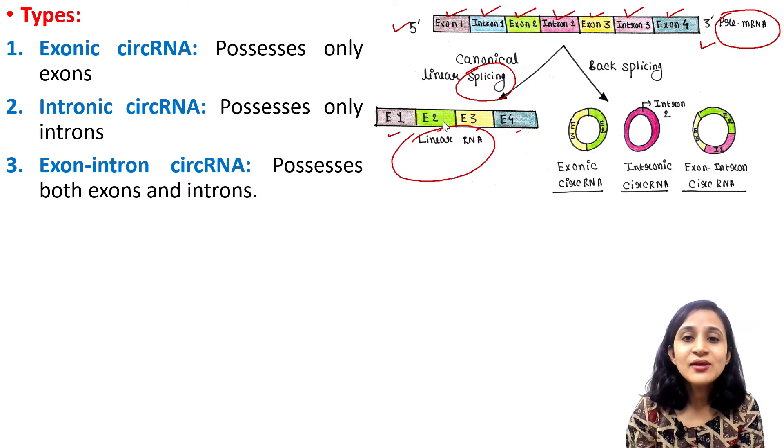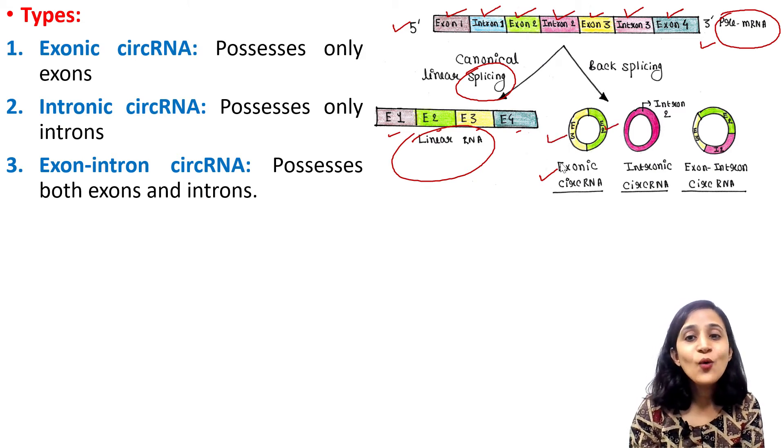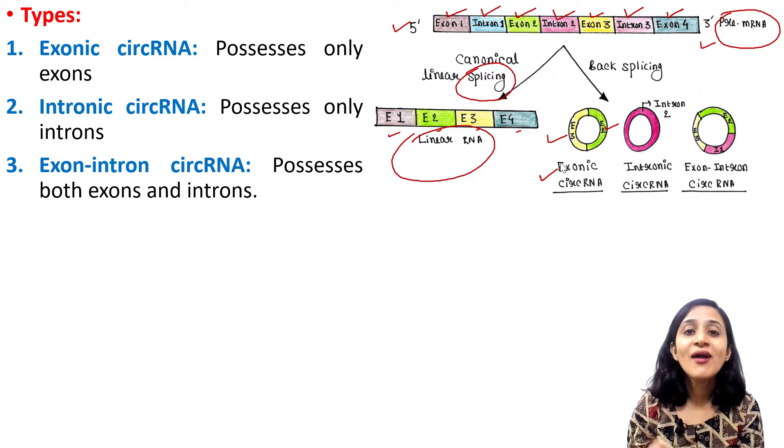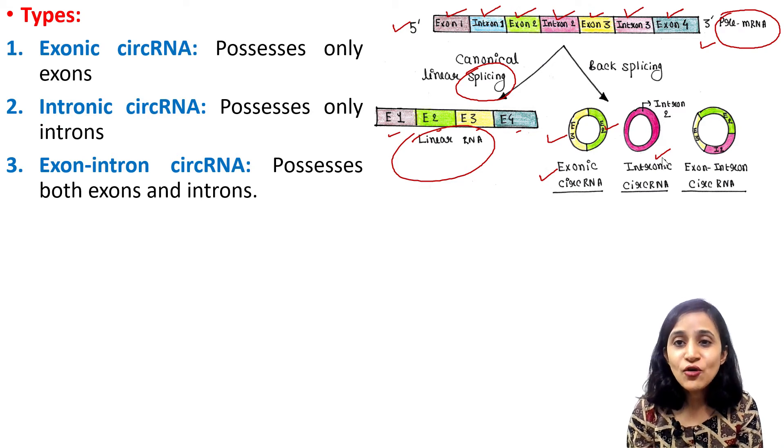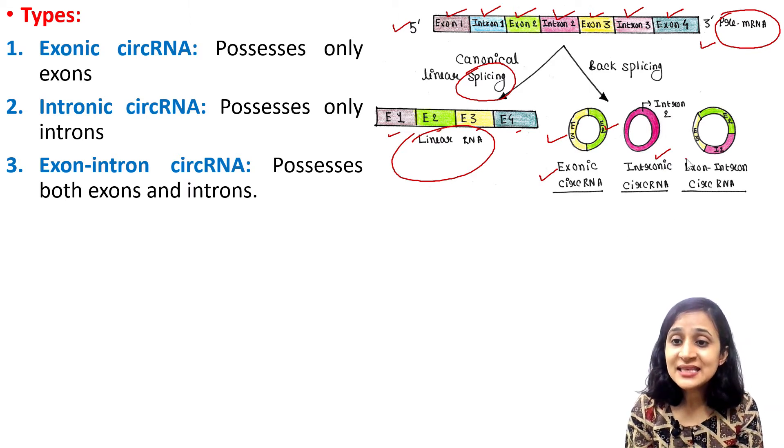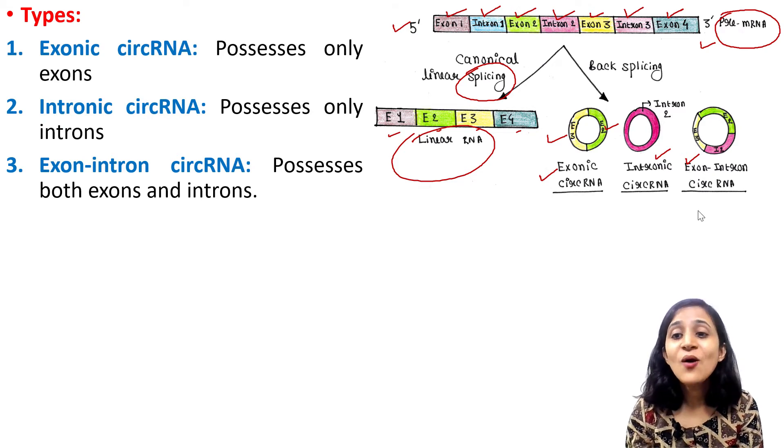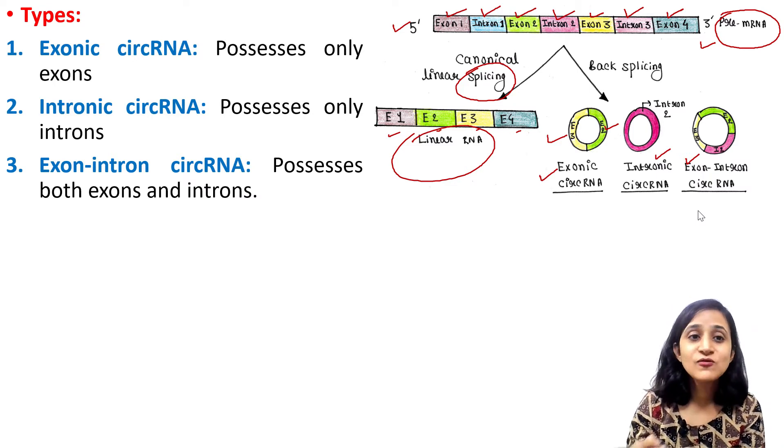And in case of back splicing, what happens? In case of exonic circular RNA, it contains exon 2 and exon 3. So this contains only two exons and it is exonic circular RNA. In this case, it contains the intron 2. Only intron 2 is present here, between exon 2 and exon 3. So it is intronic circular RNA that contains only one intron. In this case, it has both exon 2, exon 3, and intron 2. So it contains both exon and intron. So this is exon-intron circular RNA. These are the three types of circular RNAs.